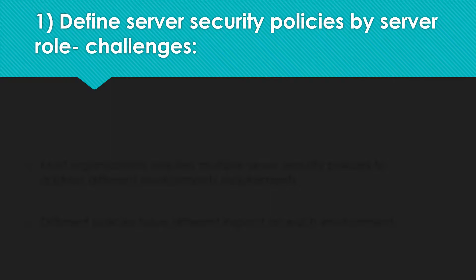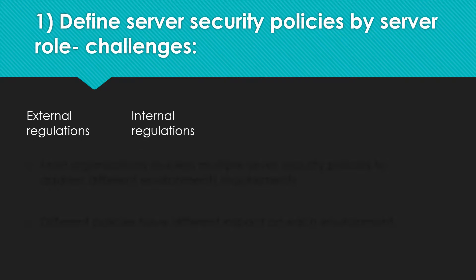The first phase is to define your server security policy. Security policies should vary according to the server's role, and are part of the organization's overall security policy. When defining the server security policy, the following needs to be taken into consideration: external regulatory mandates and industry standards the organization must abide; the organization's own internal requirements; the specific server role or environment the security policy is intended to protect; and general best practices adopted by the company, such as CIS benchmarks.